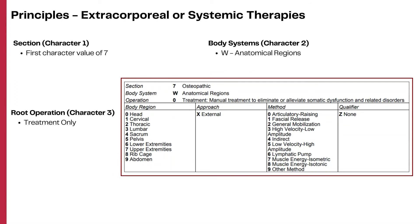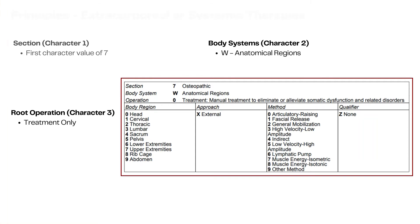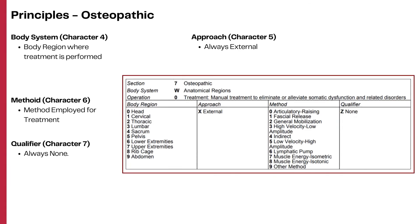For osteopathic procedures, the codes have a first character value of seven. The body system character contains anatomical regions as the value. There is only one root operation in this osteopathic section, which is treatment — manual treatment to eliminate or alleviate somatic dysfunction and related disorders.